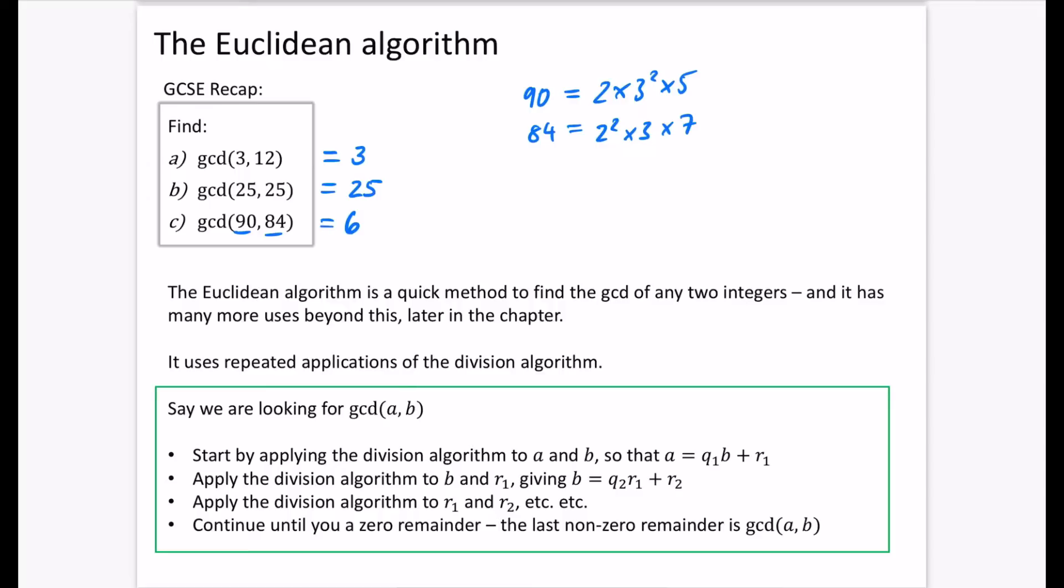Now, these are fine, right? Pretty easy with these kinds of numbers. But what we're going to do instead is we're going to use the Euclidean algorithm as a quick method to find the GCD of any two integers. And it has many more uses beyond this later in the chapter. So you might think to yourself, actually, I just prefer doing the GCSE thing. I'm just going to stick doing that. Well, that's not going to cut it because you need the Euclidean algorithm to be able to do some of the more challenging things that come up later on. And questions will often ask for the Euclidean algorithm to be used.